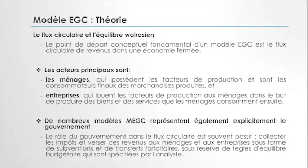Le producteur gagne aussi son profit à travers les ventes qu'il réalise. Chacun dans ces flux circulaires essaie d'avoir un revenu, ce revenu lui permettant d'acquérir un bien et service. Les acteurs principaux dans cette économie sont les ménages. Les ménages, c'est vous et moi et toute la partie qui achète, qui possède les facteurs de production et qui sont consommateurs finaux.